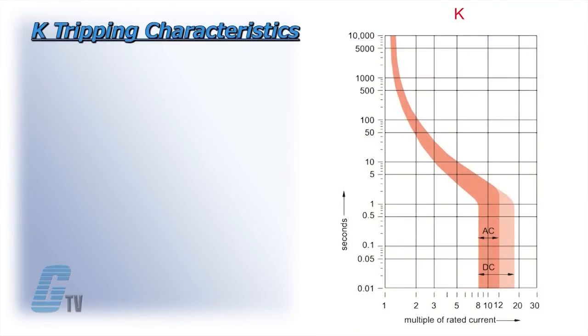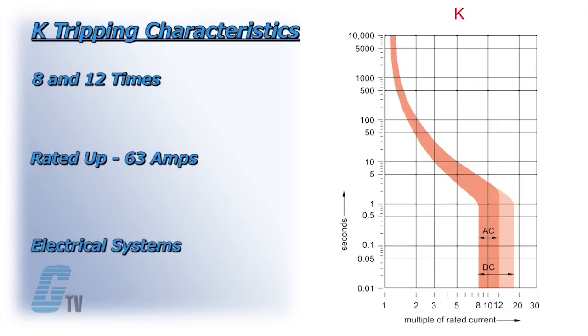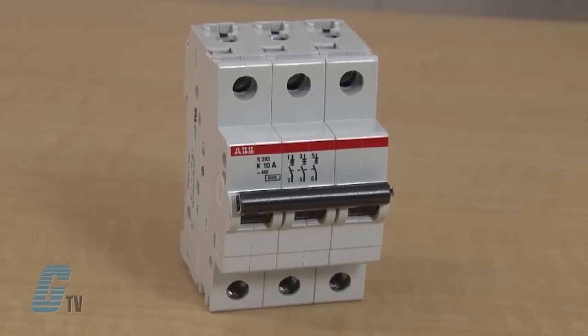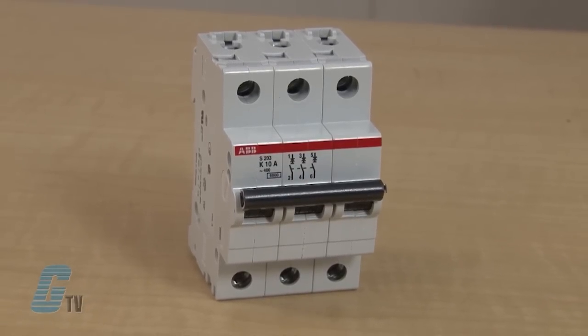The K tripping characteristic considers high magnetic start-up currents for motors, transformers, and other equipment. Instantaneous tripping occurs between 8 and 12 times rated current in 50 or 60 Hz systems. The K breakers are available up through 63 amps. The K curve offers the best protection for the broadest range of electrical systems. The higher magnetic trip settings maximize protection while allowing for higher in-rush currents during system start-up.